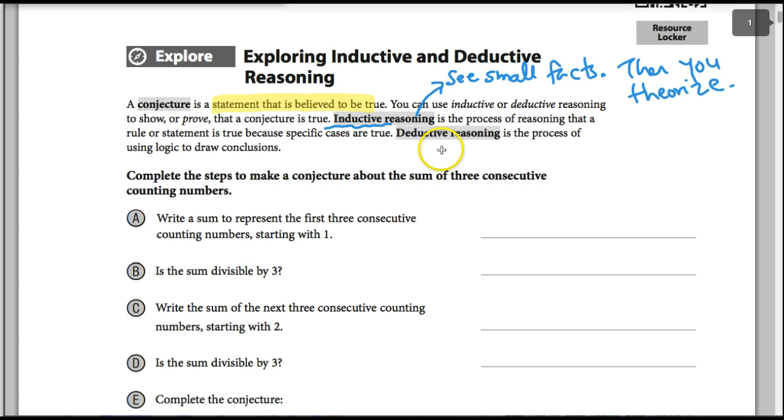Deductive reasoning is backwards. You see the big things and then you go to prove little things. And in math, we usually use deductive reasoning. Inductive reasoning is usually used in science where you look at facts and then you theorize what's happening with the universe and all that stuff.